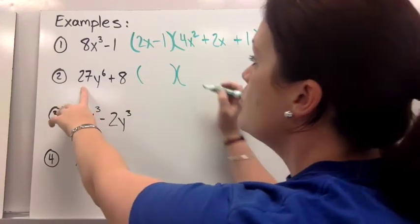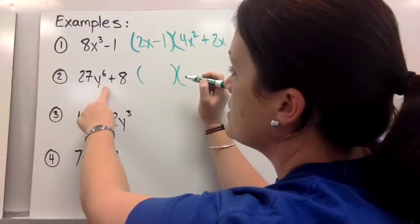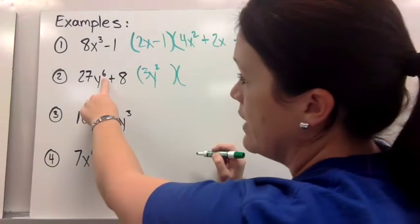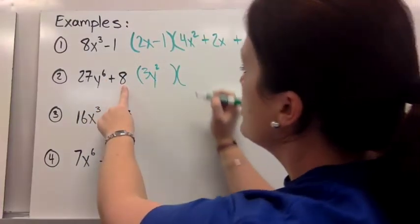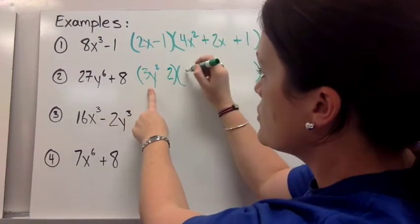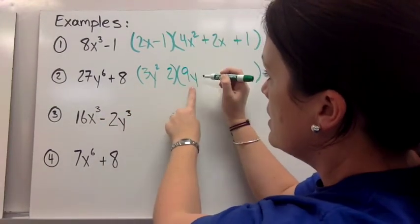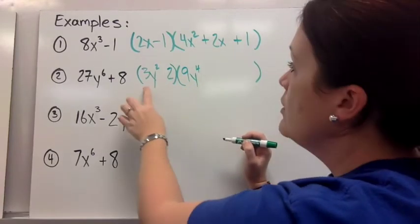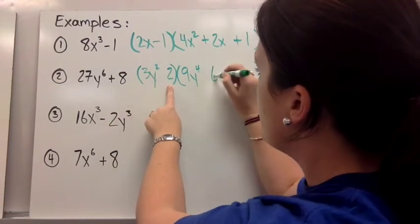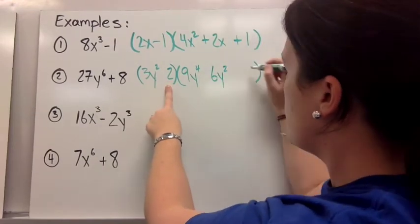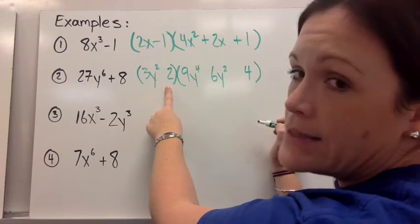So let's go ahead and factor. The cube root of 27y to the 6th power would be 3y squared, because you just divide 6 by 3, plus the cube root of 8, which would be 2. Square the first term to get the first term. So that would become 9y to the 4th power. Multiply these two together and put it in the middle. So that would become 6y squared and square the last term to get the last term.